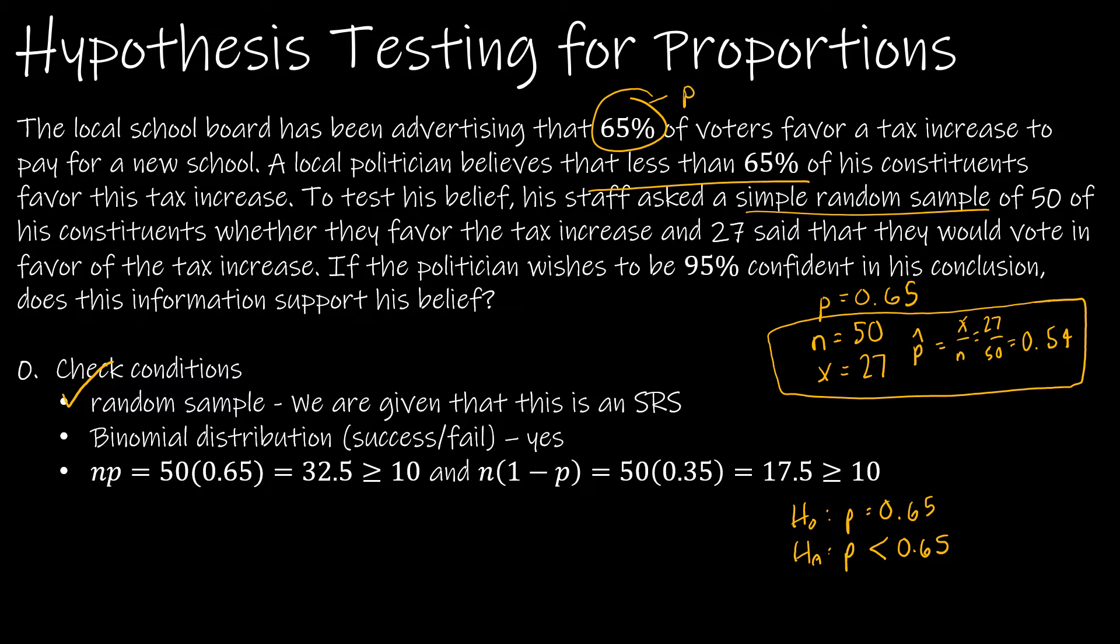If the politician wishes to be 95% confident, so alpha is 1 minus C. We're taking 1 minus 0.95 to have an alpha level of 0.05.